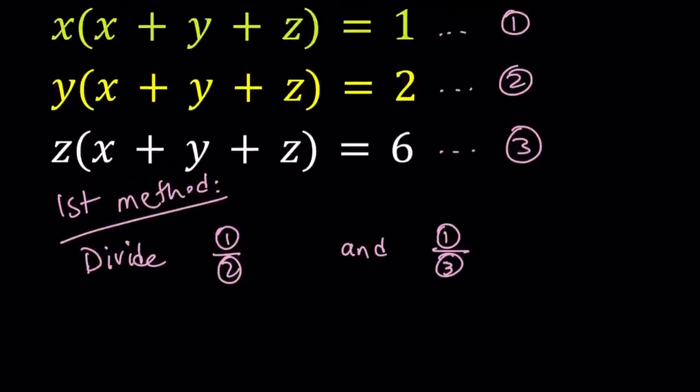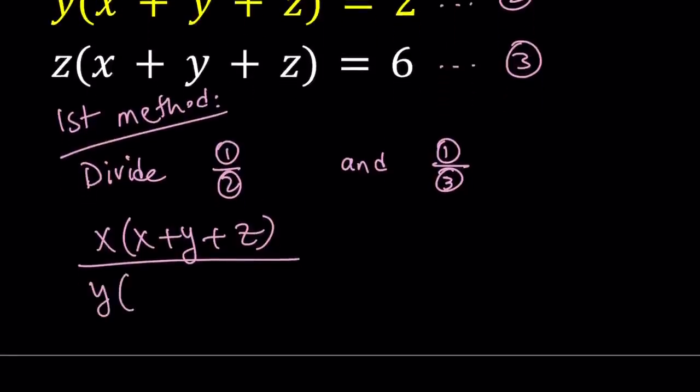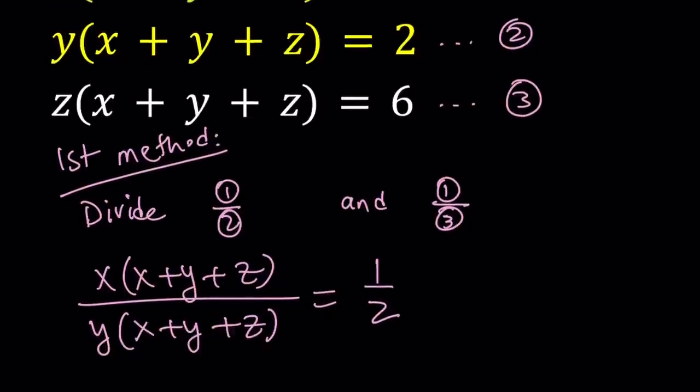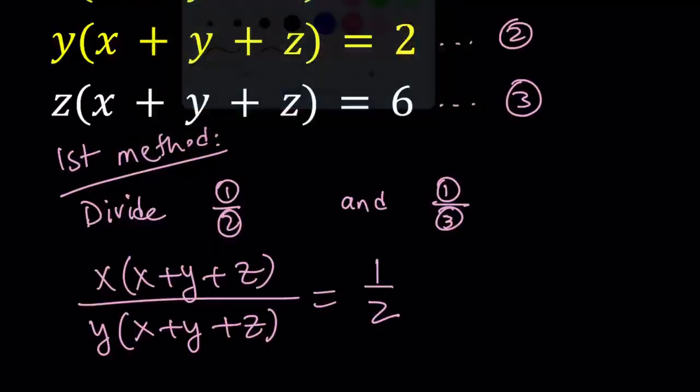But when I divide the first equation by the second equation, that should give me one half. And now we can go ahead and simplify it. Obviously, we do need the condition that x plus y plus z does not equal zero. I mean, that should be obvious because if that's the case, then you can't really find any x, y, z values. And obviously, that's not going to happen. It doesn't satisfy the system. So x plus y plus z does not equal zero. Let's go ahead and simplify this.